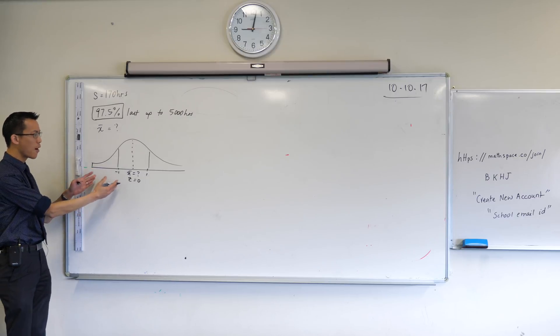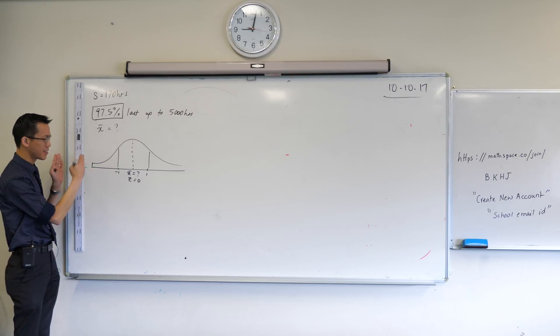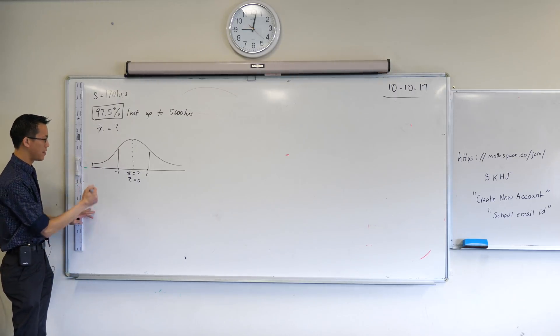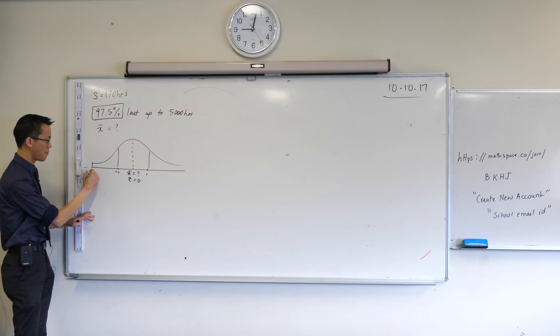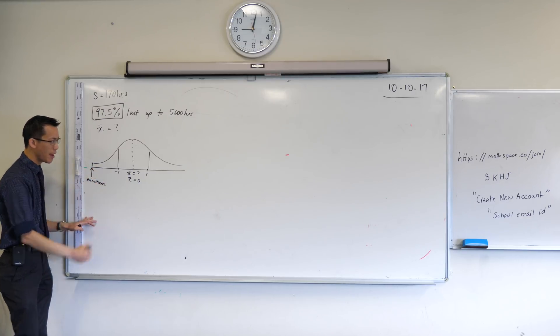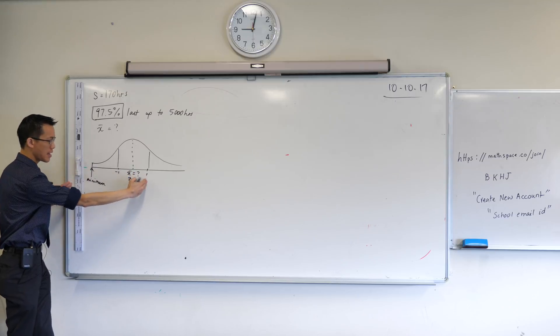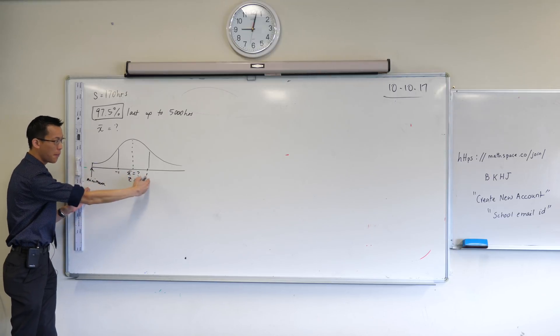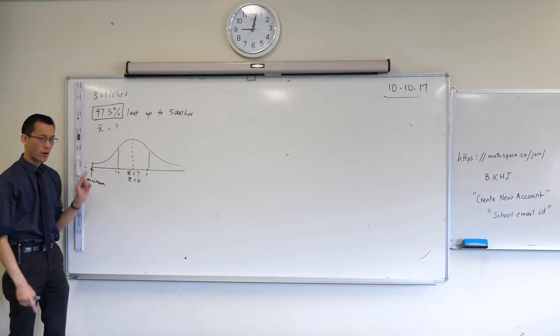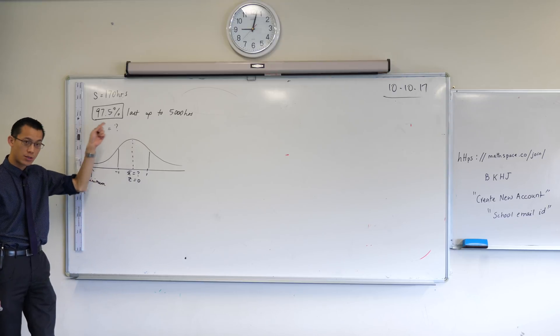If I went right to the shortest lifespan for a light globe down here, this is the minimum range. Everyone from here to here lasts up to whatever the amount of hours this score here is. Because 68% is clearly too small here, I'm going to go one more standard deviation out.